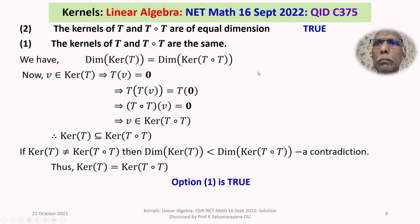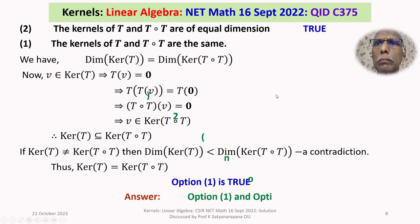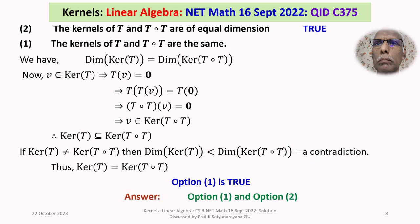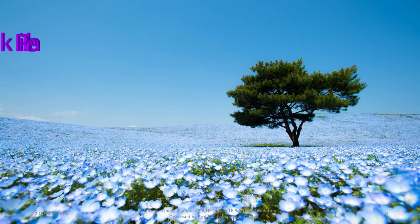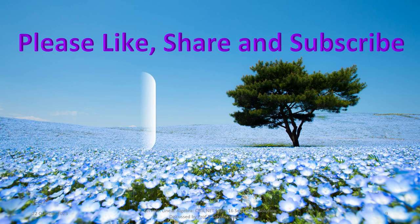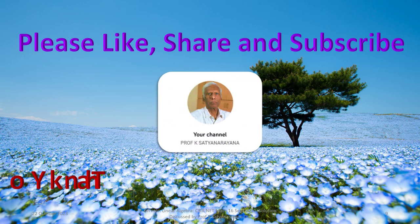Options 3 and 4 are not true. Options 1 and 2 are true. Therefore, the answer to this question is options 1 and 2. That concludes the detailed discussion of the solution on the kernels of T and T∘T from the section Linear Algebra. I hope you have understood the solution. I wish you all the best. Thank you.